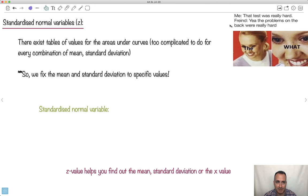Today we're going to be doing standardized normal variables. Like this: That test was really hard. Friend. By the way, someone wrote friend wrong, didn't they? Yeah, the problems on the back are really hard. So there exist some tables of values. People have actually figured these out. This has been solved. But it would be really complicated to do for every combination of every mean and every standard deviation. So instead, what they've done is they've made the mean 0 and the standard deviation 1. This is the key thing. And then we can find the area to the left again still. So this would be something called a Z value.